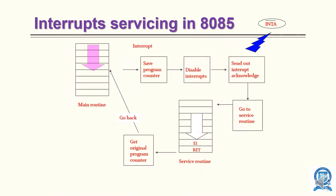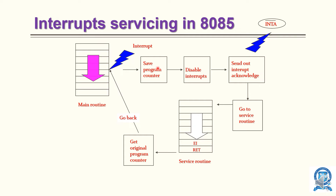Here you can see the main routine flow going on. If we consider an interrupt occurring at a certain point — you can see an interrupt has occurred here — the main program execution is stopped. The processor saves the program counter, disables the interrupt, and then goes to the service routine.